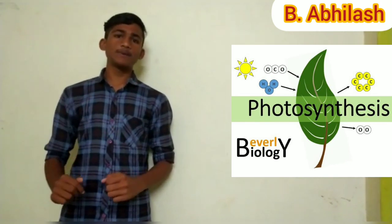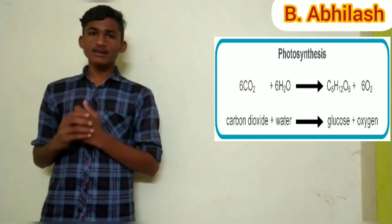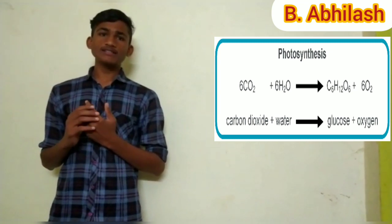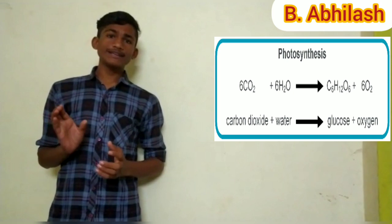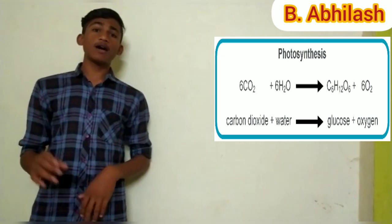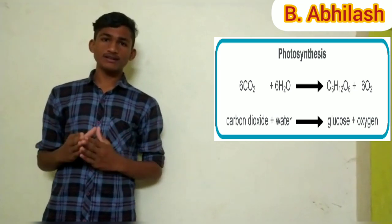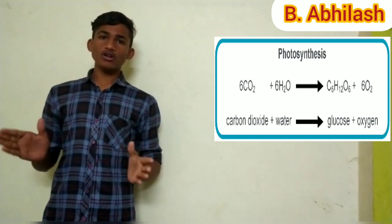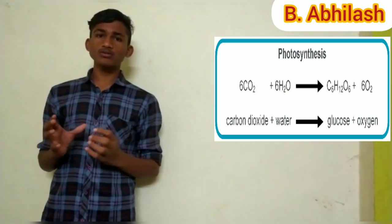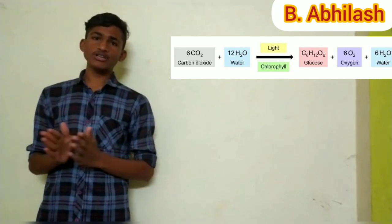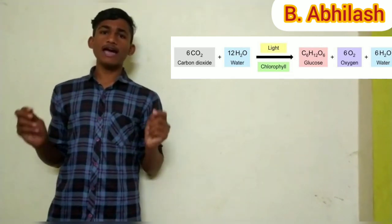Now let's go through the light-dependent reaction. Light-dependent reaction is also called as photochemical force. These light-dependent reactions take place at the daytime. The chlorophyll gets activated by exposing to the sunlight by absorbing the photons. Photons are the smallest unit of light energy. This photon energy or sunlight energy is used to split down the H2O molecule into H+ and OH- ions.